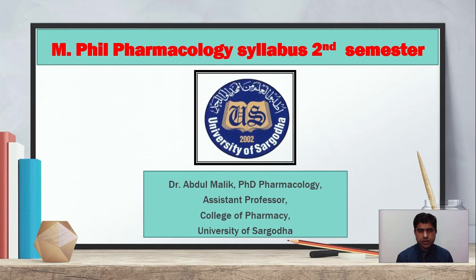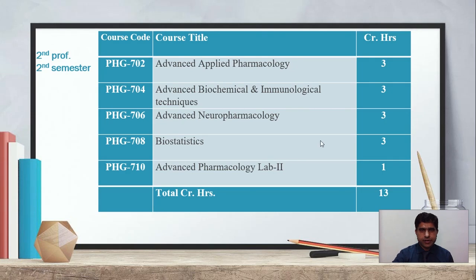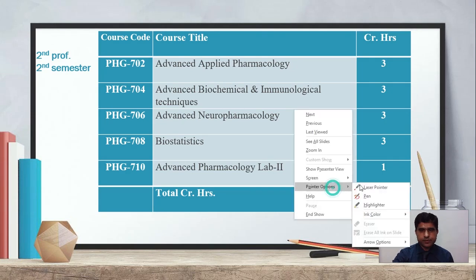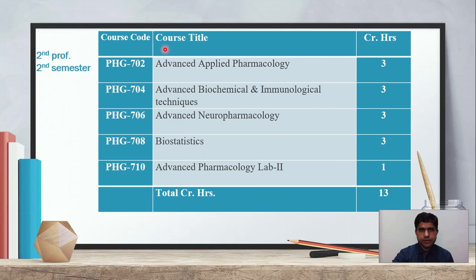Today I am going to discuss the MFM Pharmacology syllabus second semester. Let us see what are the major subjects and their credit hours. The course titles are: Advanced Applied Pharmacology, Advanced Biochemical and Immunological Techniques, Advanced Neuropharmacology, Biostatistics, Advanced Pharmacology Lab 2, and the total credit hours are 13.